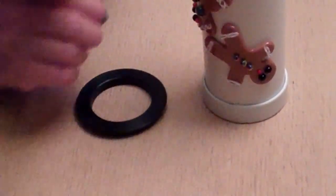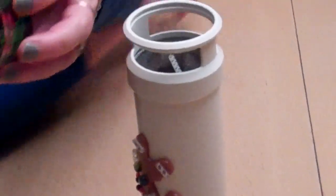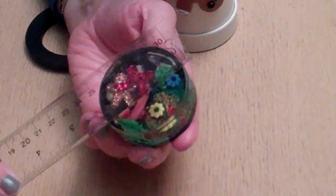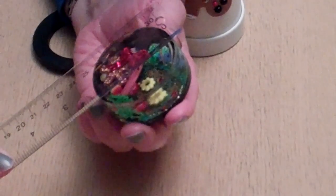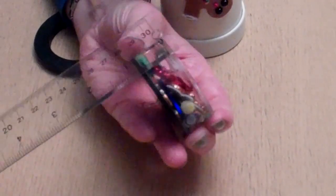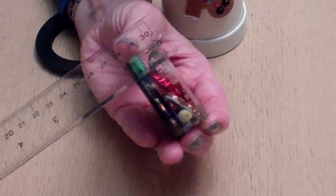Now the object chamber itself has a diameter of just over two inches, about two and a quarter inches, and a depth of just under one inch.